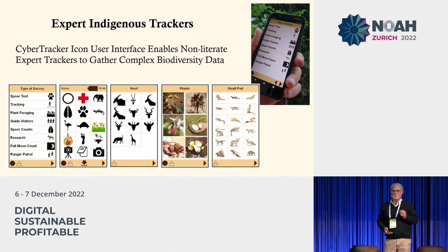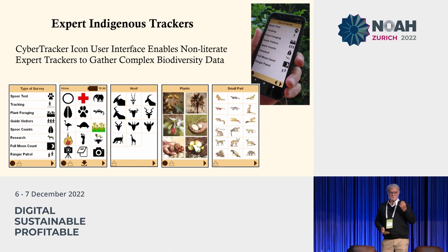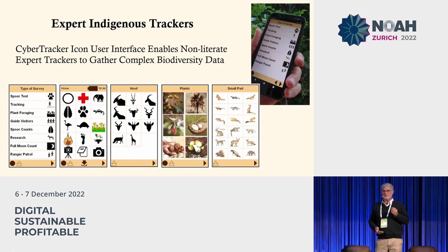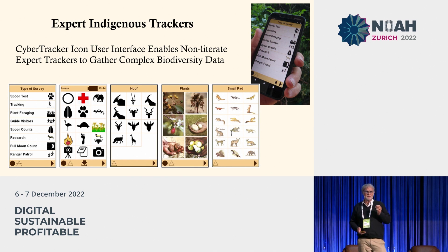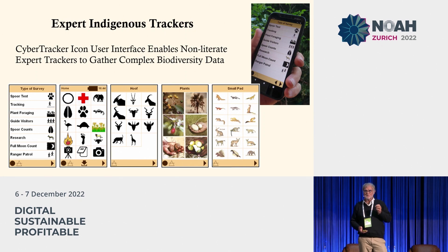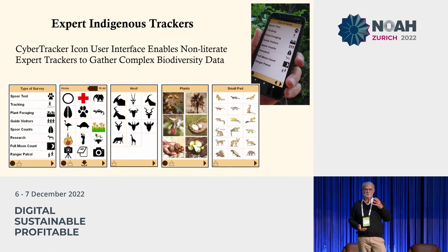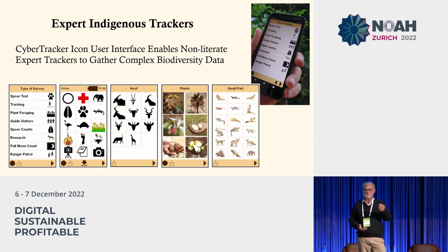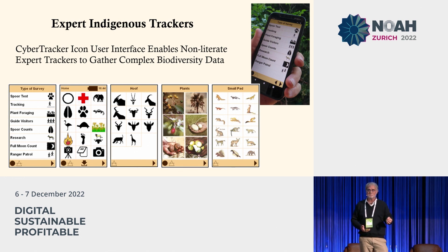One of the key problems is that your best indigenous trackers usually cannot read or write. Yet my project started out with the hypothesis that indigenous tracking is equivalent to the same reasoning processes required in physics and mathematics — which incidentally solves a problem in human evolution: how did we evolve a human brain that can do physics and math? I spent about 10 years showing that indigenous trackers, when they interpret tracks and signs, use the same scientific reasoning, which implies that we should be able to employ them to do good science.